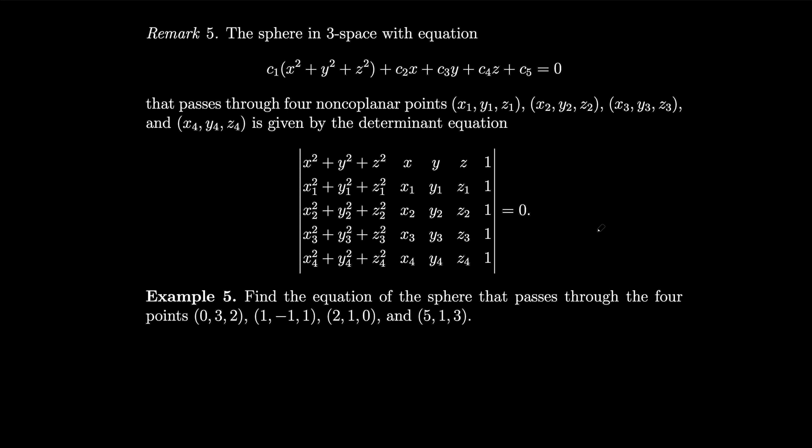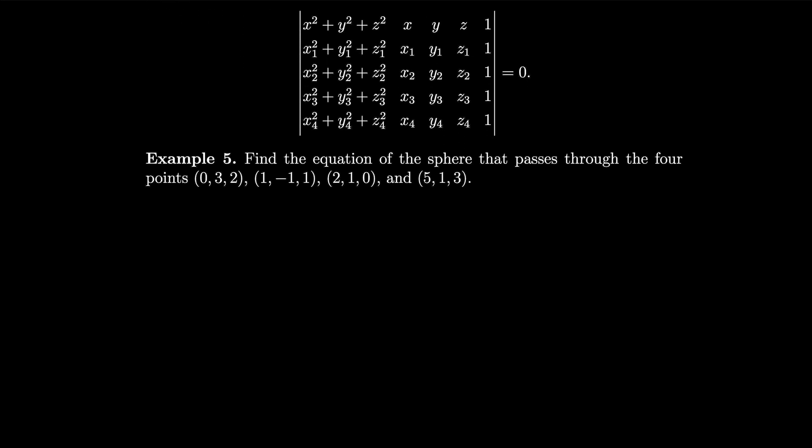The sphere in three space with equation c1 times x squared plus y squared plus z squared, c2x, c3y, c4z plus c5, etc., equal to zero, that passes through four non-coplanar points. So we're passing through four points now, is given by this determinant equation. So instead of a circle, we now have a sphere, because we have z squared. How about we find the equation of the sphere that passes through these four points that we're given right over here.